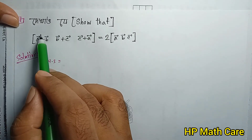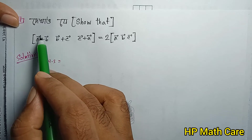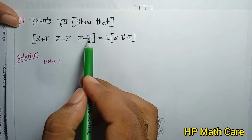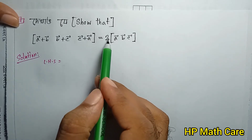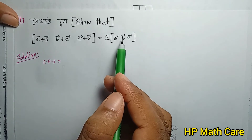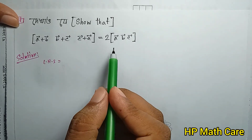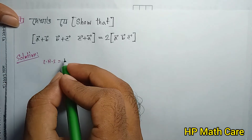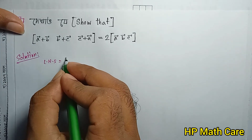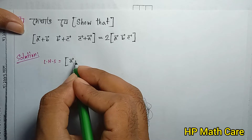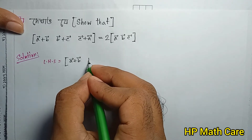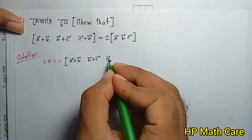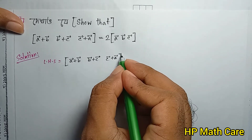Now let's prove that box product [a+b, b+c, c+a] equals 2 times box product [a, b, c]. We set up box product of (a vector plus b vector), (b vector plus c vector), (c vector plus a vector).